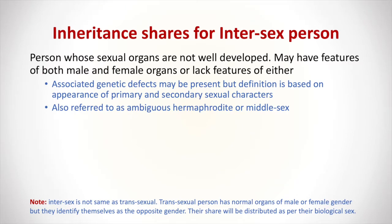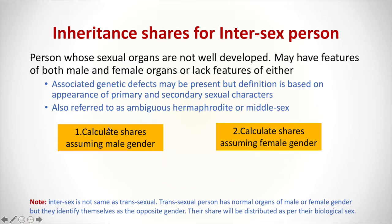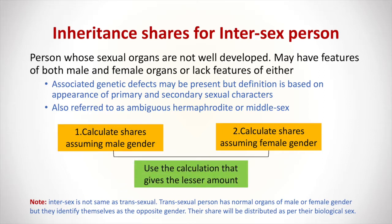A special case is the inheritance of an intersex person — one whose sexual organs are not well developed, who may have features of both male and female, or lack features of either gender. To calculate shares, we calculate assuming the person is male, then assuming the person is female, and give the lesser amount to the person. Intersex is distinct from transsexual: a transsexual person is born with normal biological sex organs but identifies with a different gender. For transsexual persons, inheritance shares are based on their biological sex.